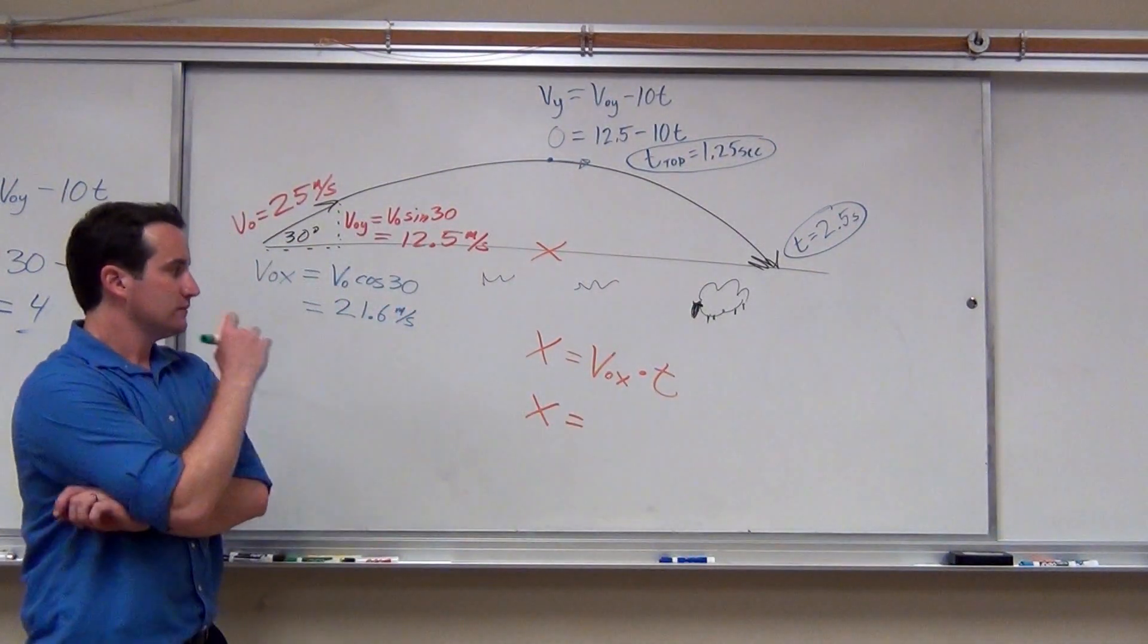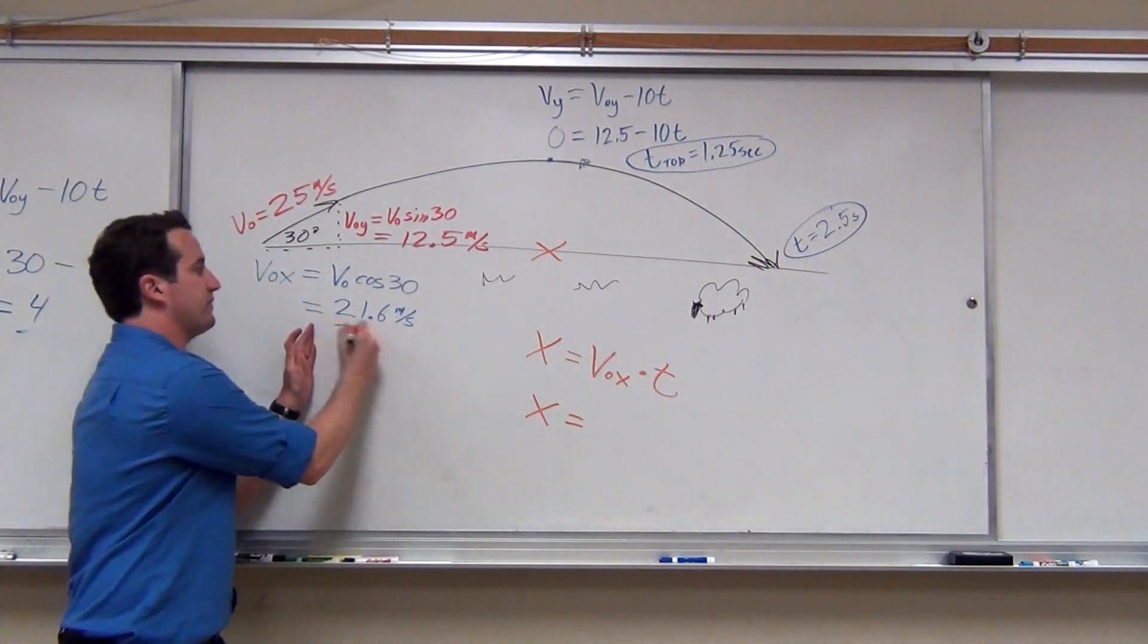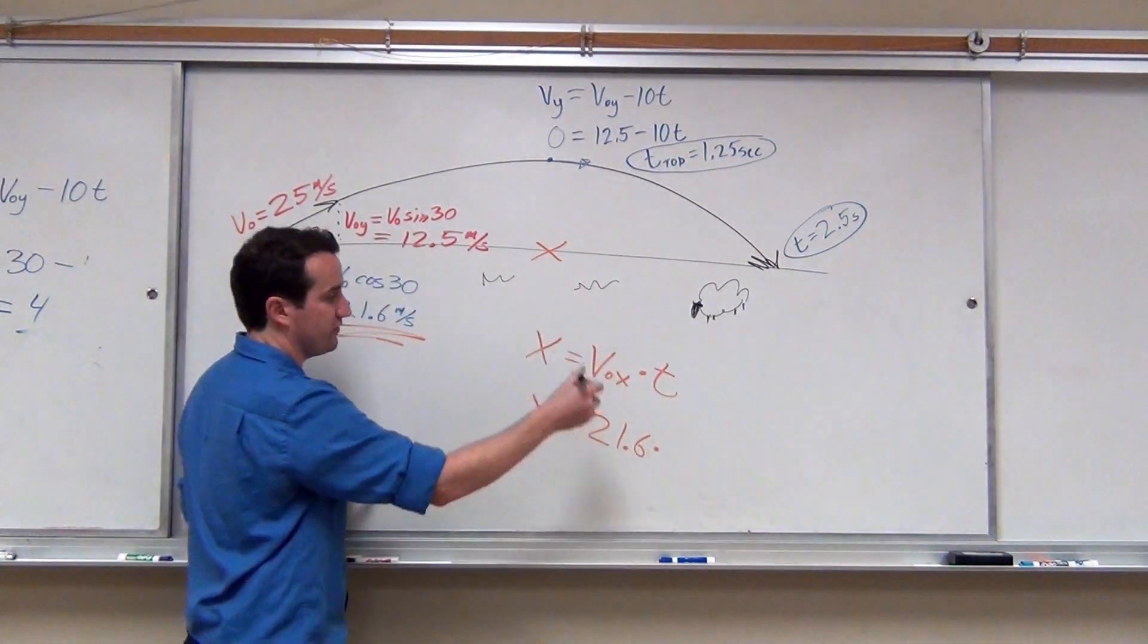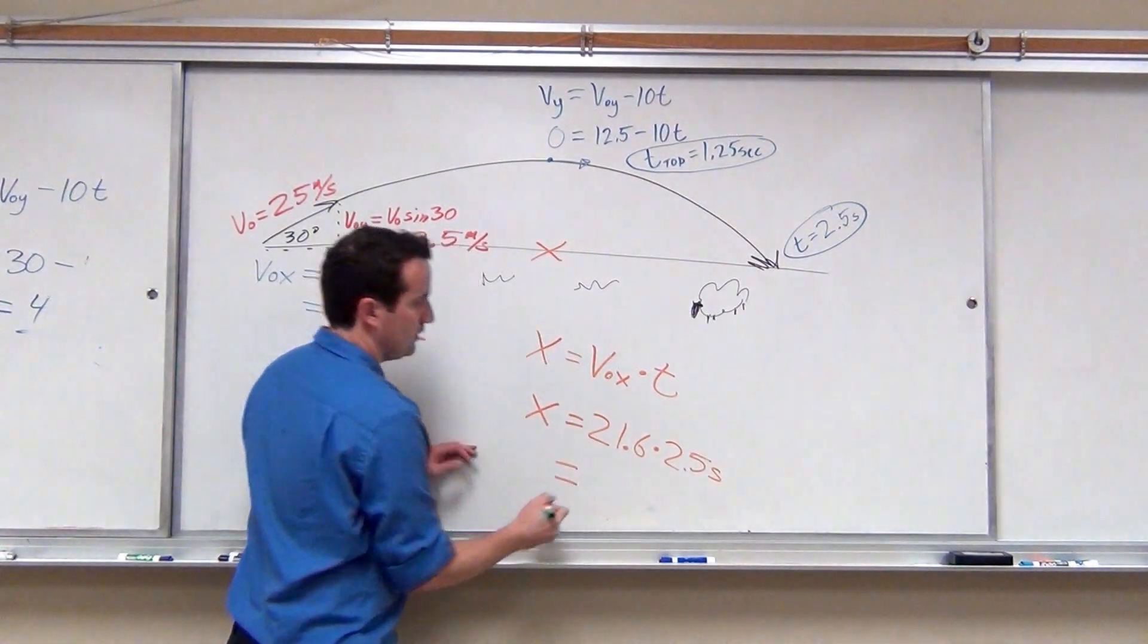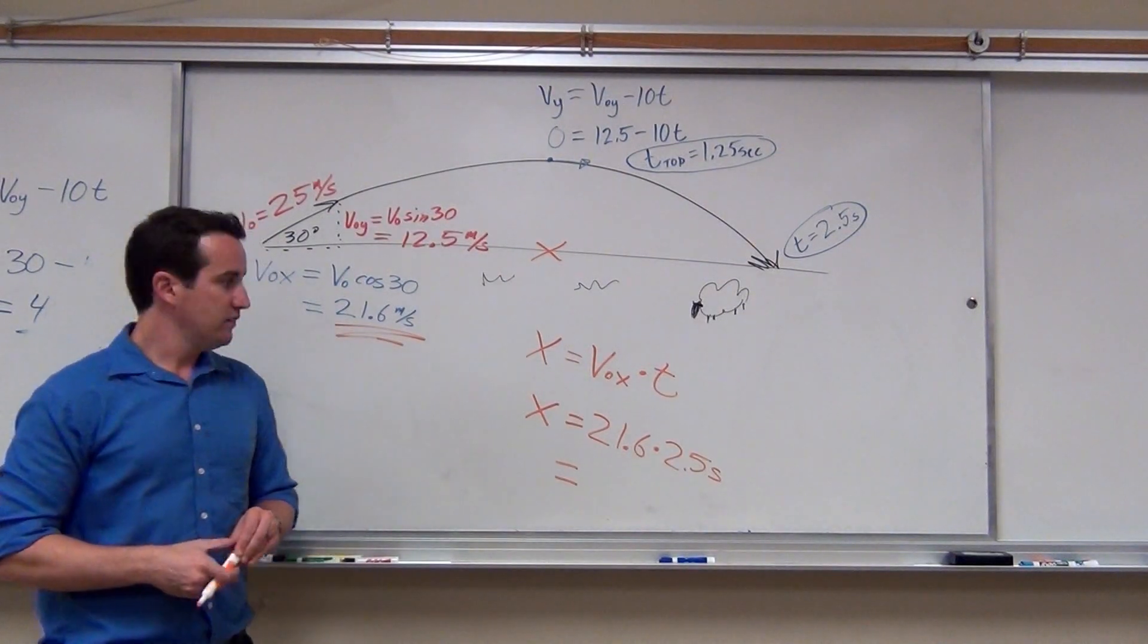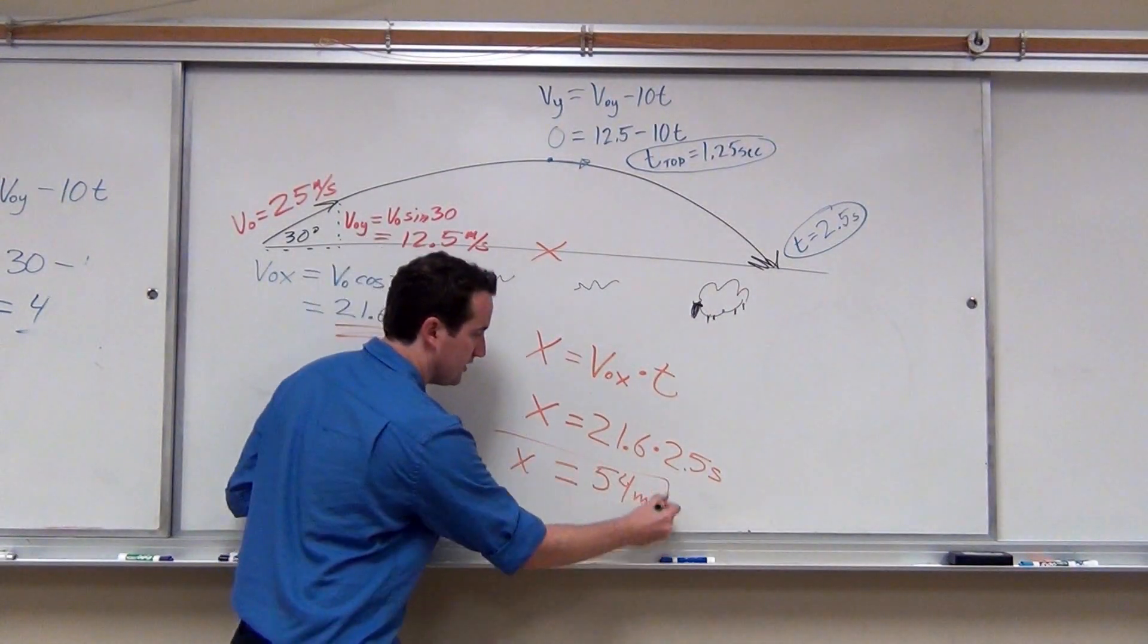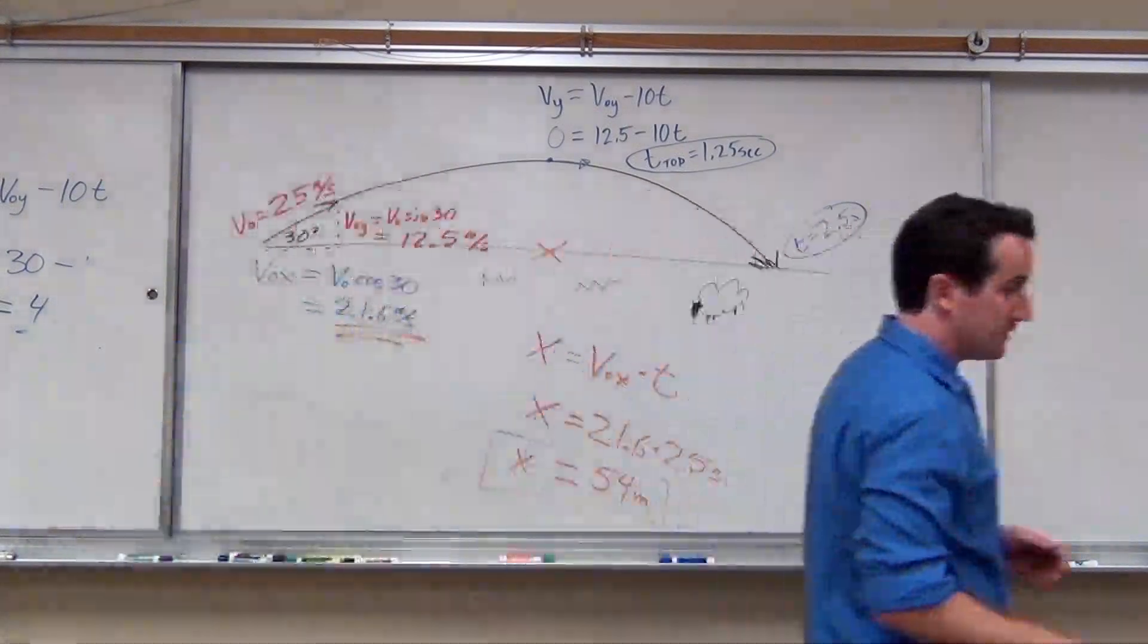54. The X velocity we already calculated is 21.6, and this takes 2.5 seconds. Somebody thinks that's in the 50s. 54 meters. That's our theoretical prediction. Let's try out the experiment and see if this really happens.